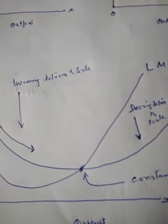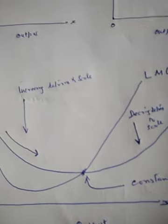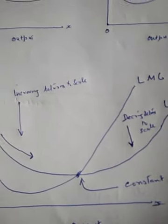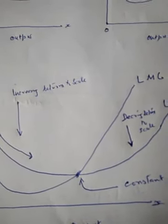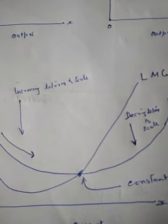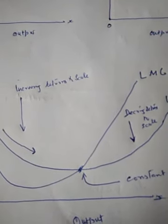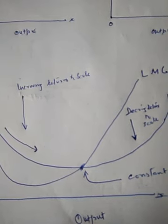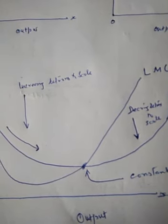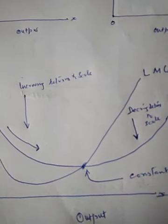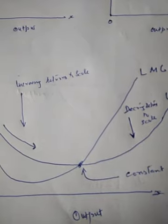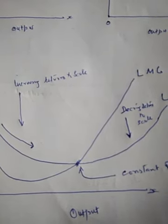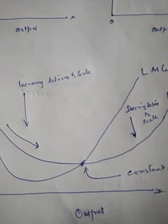The reason behind this is economies and diseconomies of scale — these are situations which emerge due to large scale production, and we will be discussing this in the next lecture. To summarize: long-run average cost falls owing to increasing returns to scale, it rises owing to decreasing returns to scale, and it remains constant owing to constant returns to scale. The long-run marginal cost behaves similarly.